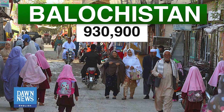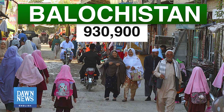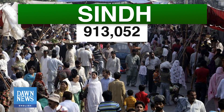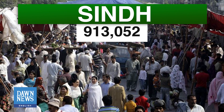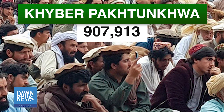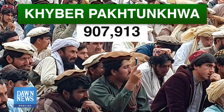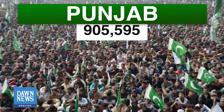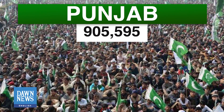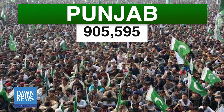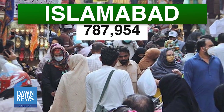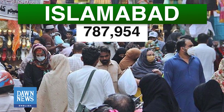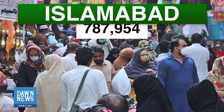Balochistan has 930,900 voters, Sindh has 913,052, Khyber Pakhtunkhwa has 907,913, Punjab has 905,595, and Islamabad has 787,954 voters.